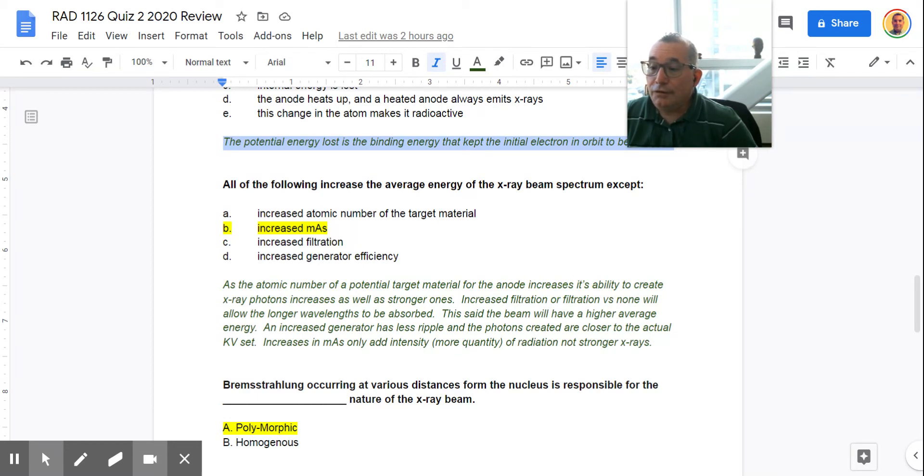Also, if we increase the efficiency of the generator, it's going to have something known as less ripple, which I mentioned during our lecture. And more importantly, the photons that are actually created are going to be closer to the actual KV that was set. So if you're using a single phase generator and you set 90 KV, you're lucky if you get about a third of that, maybe 30 or so KV for the majority of the photons created. Whereas a triple phase or a high-frequency generator is much more efficient, and that's going to give you photons that are actually closer to the 90 that you actually set.